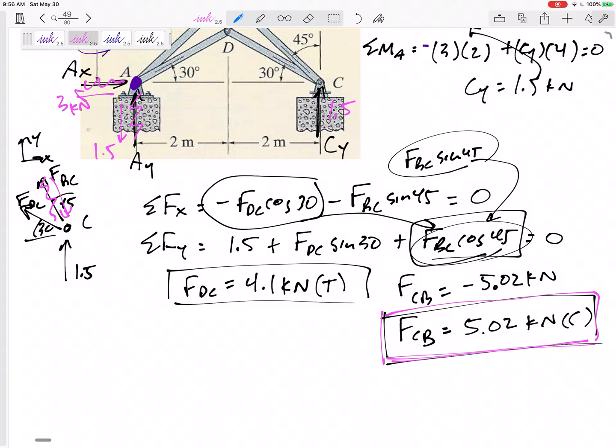Whether you drew it this way or that way. Everybody's going to get 5.02 kilonewtons, parentheses C. 5.02 kilonewtons compression.